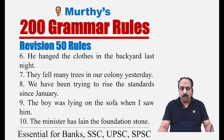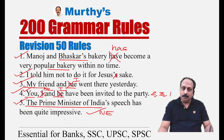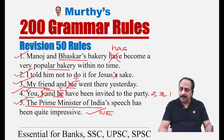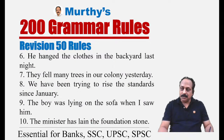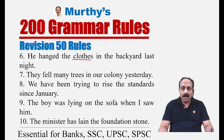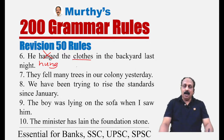'Has been' is used because there is no time reference — when there is no specific time mentioned and we talk about a past action, we use present perfect tense, not past tense. Sentence six deals with hang/hung/hanged. The context talks about clothes — things. 'Hanged' goes with a person, and 'hung' goes with things. So the correct sentence is: 'He hung the clothes in the backyard last night.'